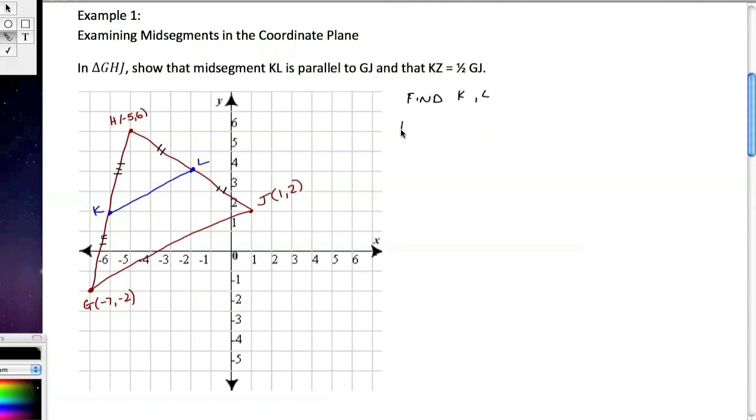So we're going to find the midpoint of HG. This is how we're going to do it. We're going to say that this is equal to negative 5 plus negative 7 over 2, comma, 6 plus negative 2 over 2, which is going to give us negative 6, comma, 2. So K is negative 6, comma, 2.